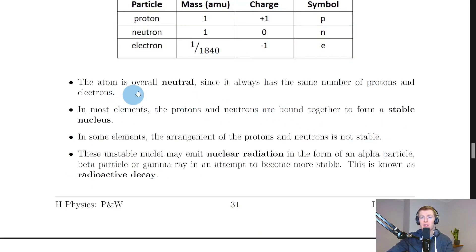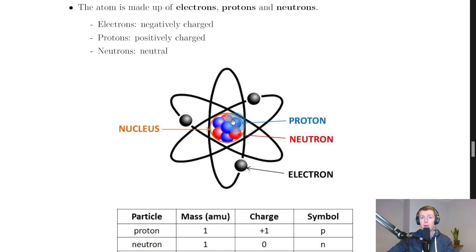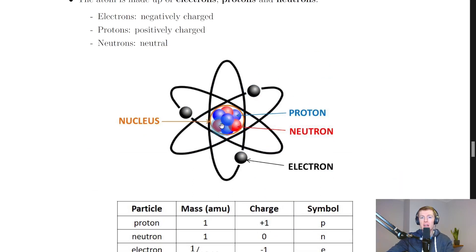Another thing you might remember from National 5 is that the atom is overall neutral, since it always has the same number of protons and electrons. That means the same number of protons, the blue ones inside the nucleus, as the number of electrons orbiting the nucleus.